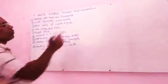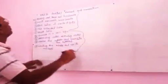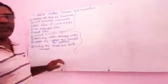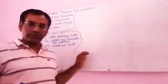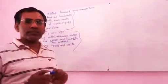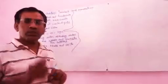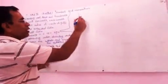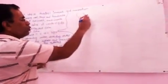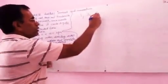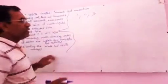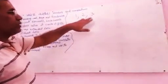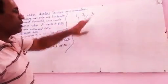Now, topic number 1: Revising 1's, 10's, and 100's. In 1's, only 1 digit comes — for example, 1, 2, 3. These are all 1's.